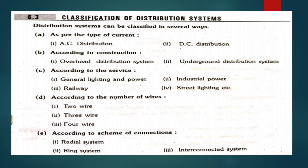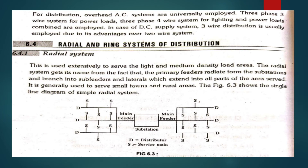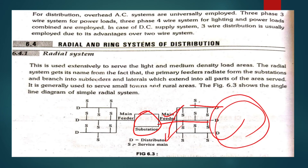First, the radial system. Radial means we have a substation with one path — main feeder, then distributor, then service mains — that means a single path. The total power is supplied from the top of this system. If there is a fault in the radial system, the total system will be affected. This is a drawback of the radial system.